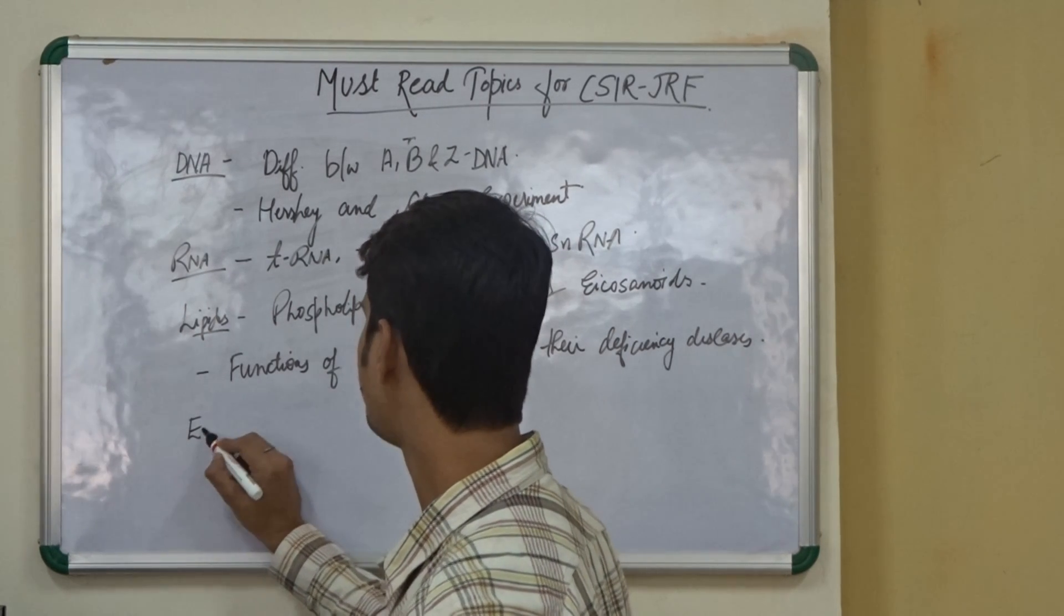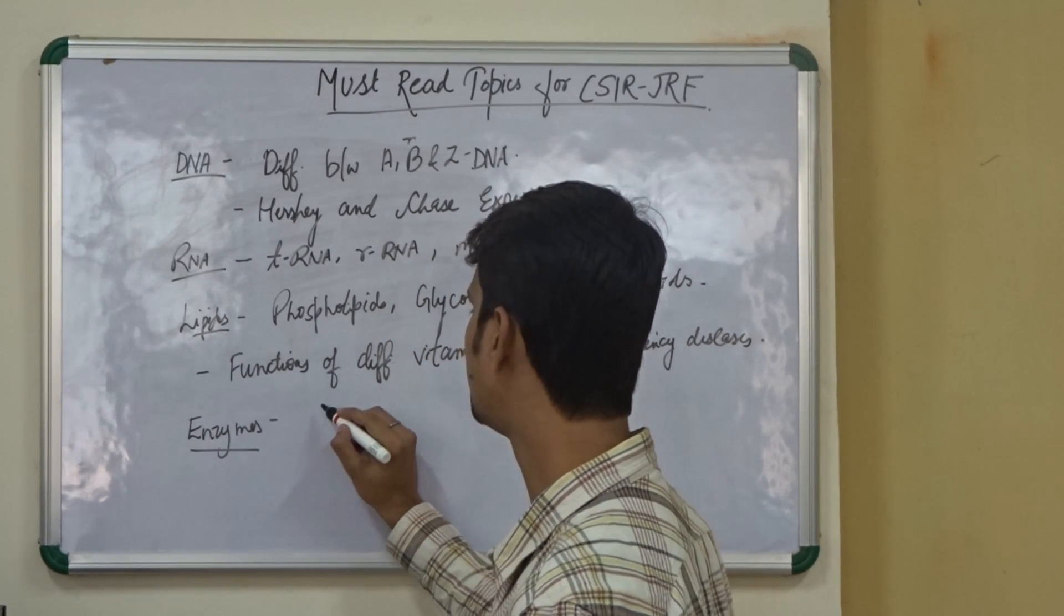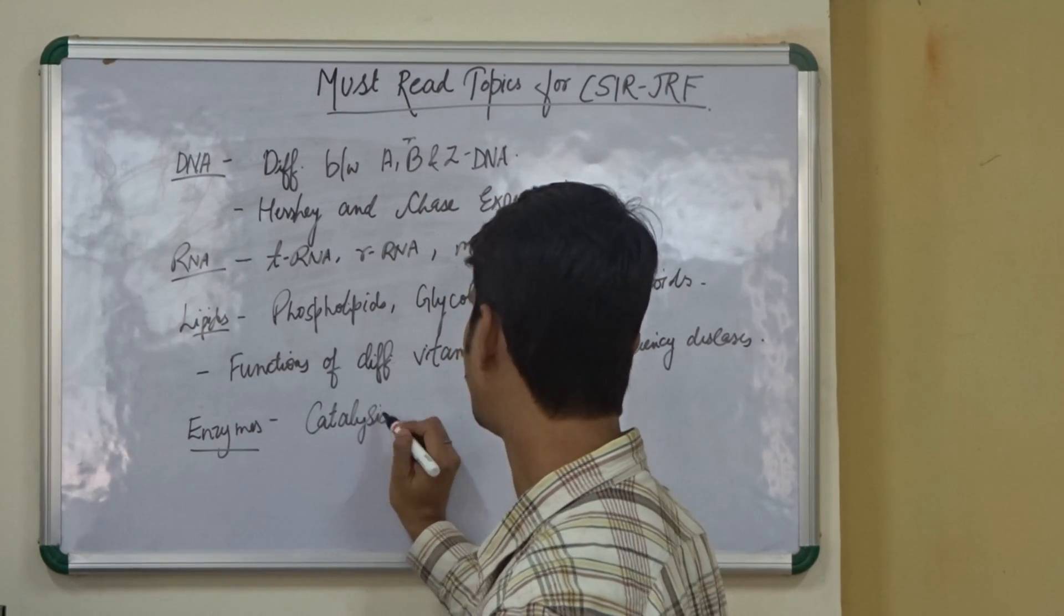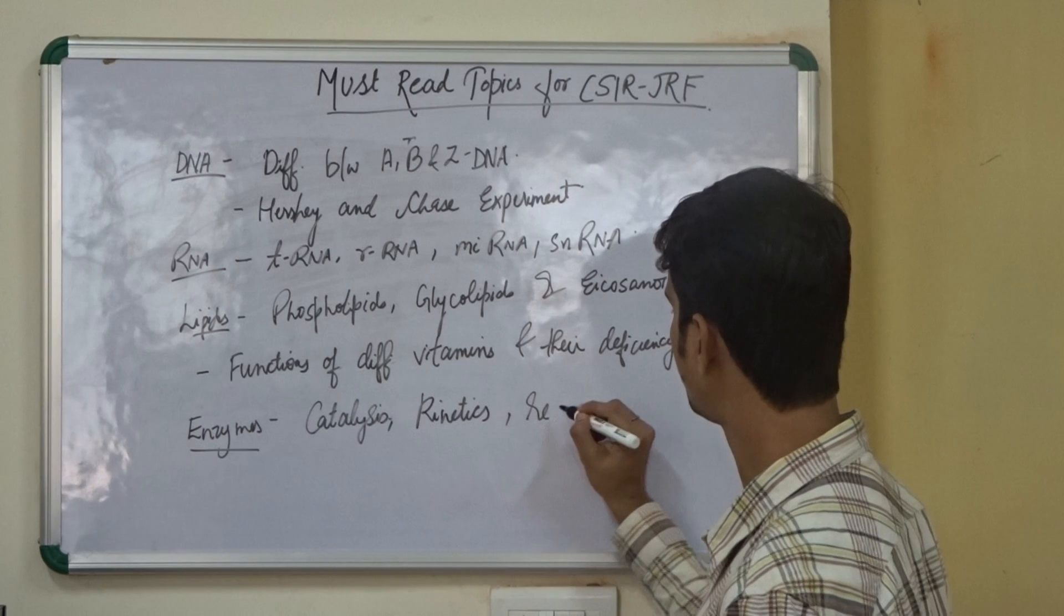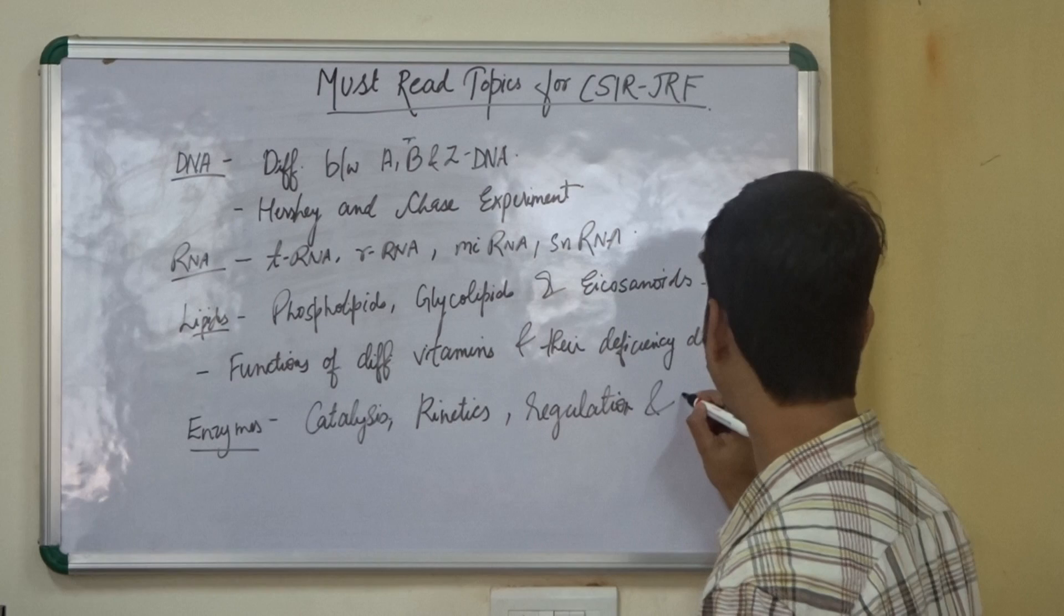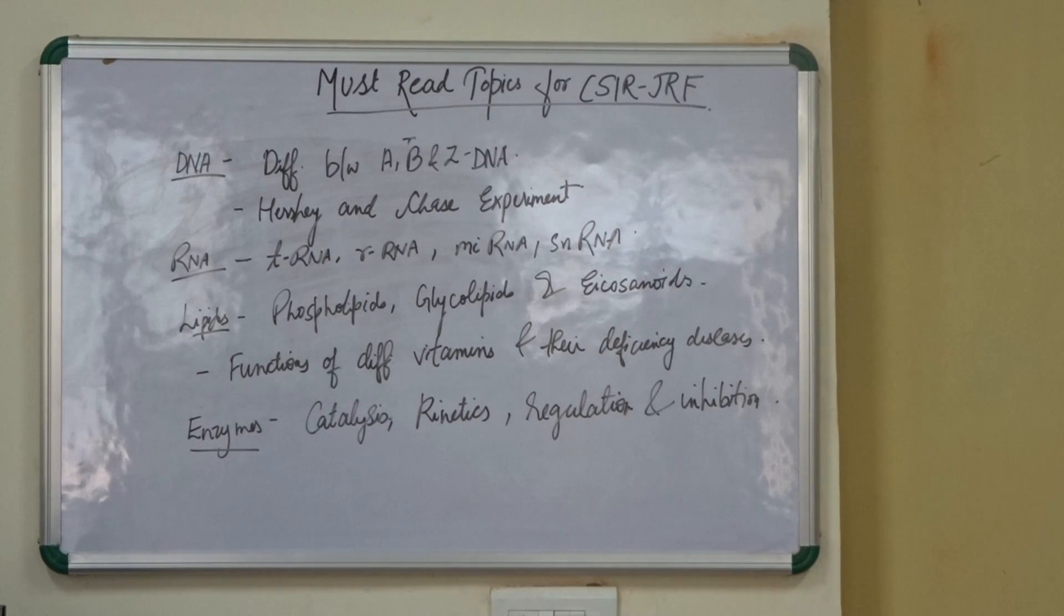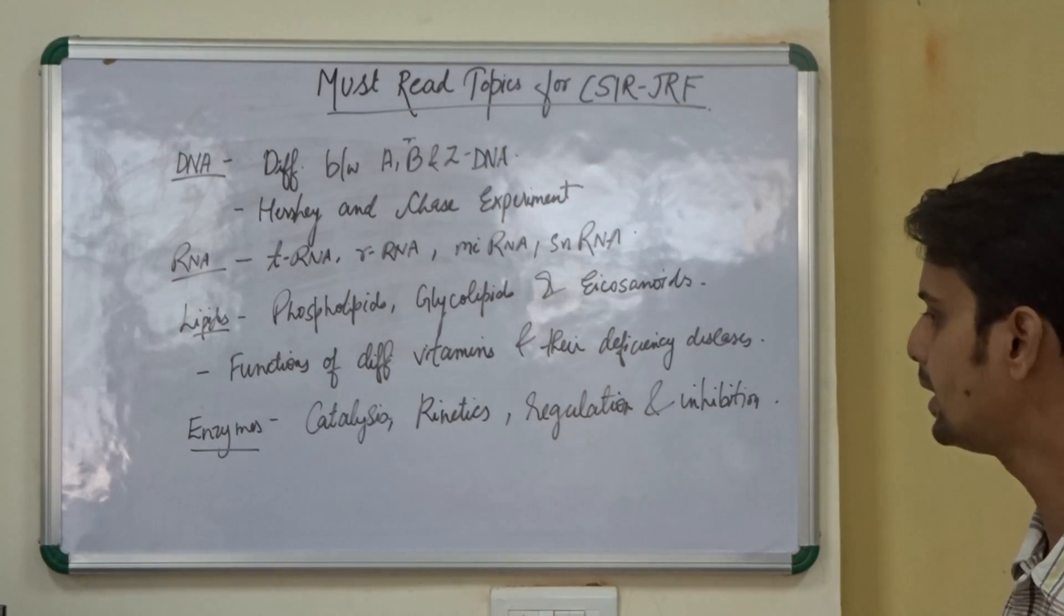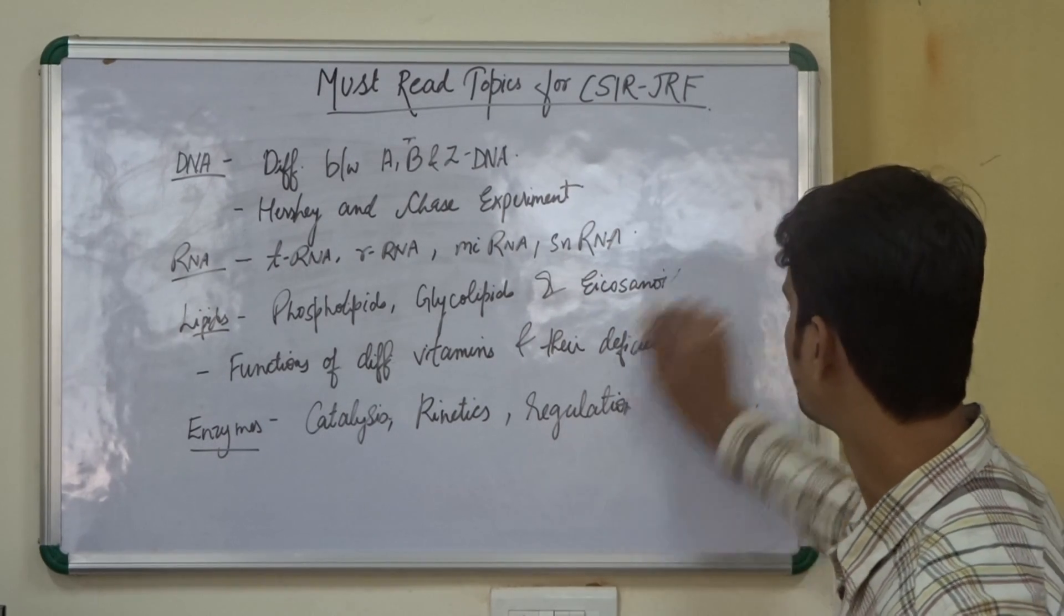We also need to know about the functions of different vitamins and their deficiency diseases. The last part is the enzymes and you need to go through this, this part is a very important part. We need to know about the catalysis, the kinetics, enzyme regulation and inhibition. This sums up our first unit of the CSIR syllabus. These are the points that you need to know about before going to the exam.